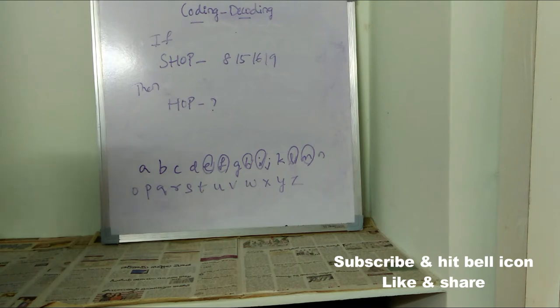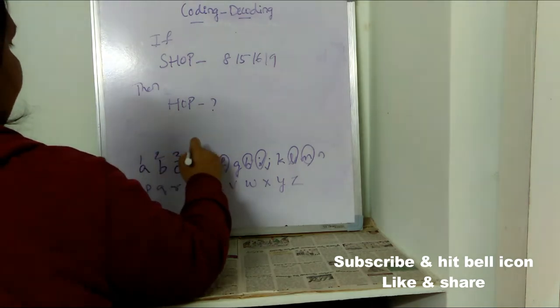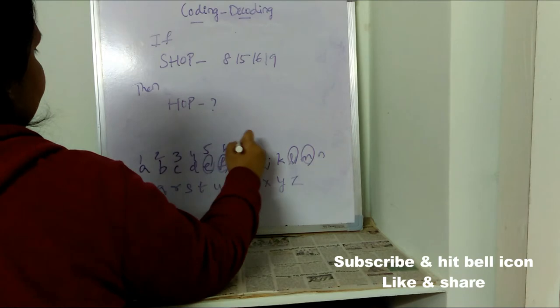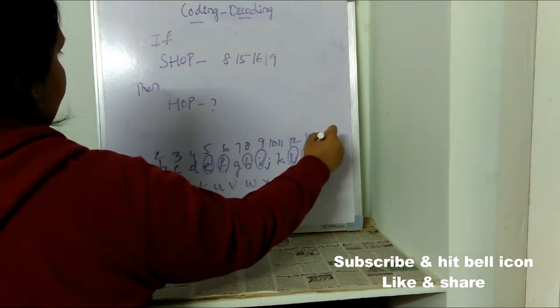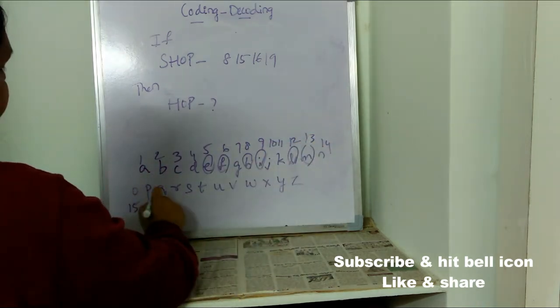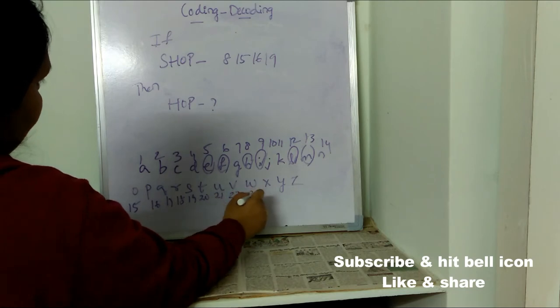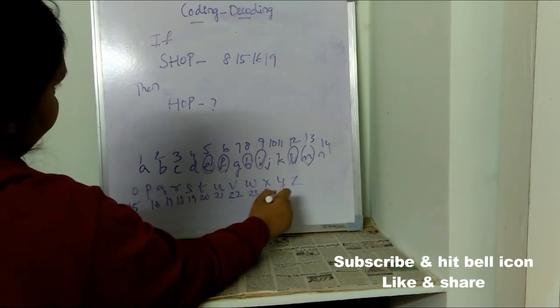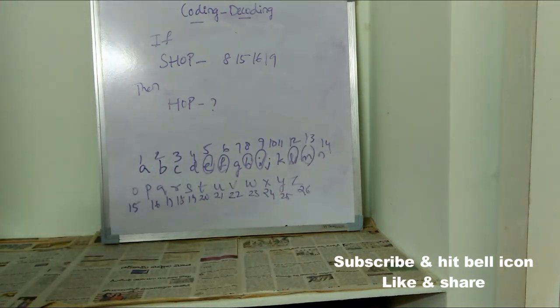Like 1, 2, 3, 4, 5, 6, 7, 8, 9, 10, 11, 12, 13, 14, 15, 16, 17, 18, 19, 20, 21, 22, 23, 24, 25, and 26. We have written the numbers because this question has numbers in it.